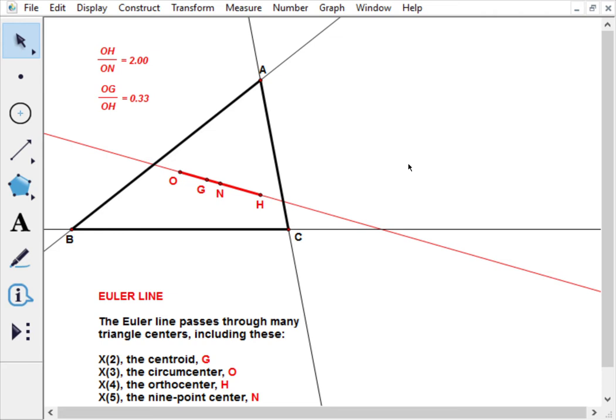This worksheet showing the Euler line is from Clark Kimberling's website, Encyclopedia of Triangle Centers. The Euler line is perhaps the most remarkable line of a triangle, and it passes through three points we've already discussed.